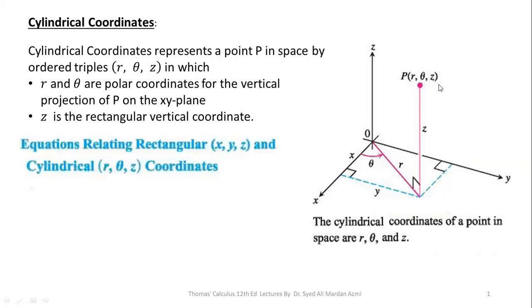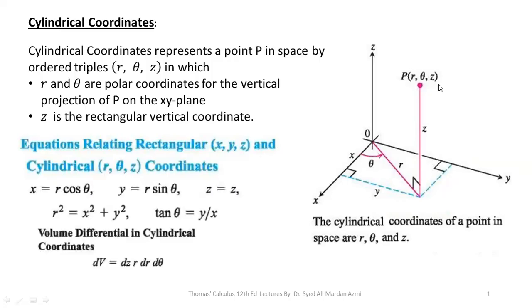Next, we will learn about the transformation equations of the cylindrical coordinate system. In the cylindrical coordinate system, the transformation equations are: X is equal to R cos Theta, Y is equal to R sin Theta, and Z is equal to Z — meaning the third axis Z remains the same in both cylindrical and rectangular coordinate systems. The value of R squared is equal to X squared plus Y squared, and tan Theta is equal to Y over X.